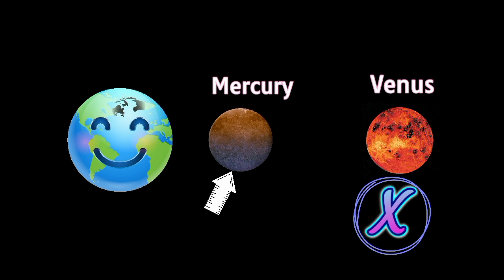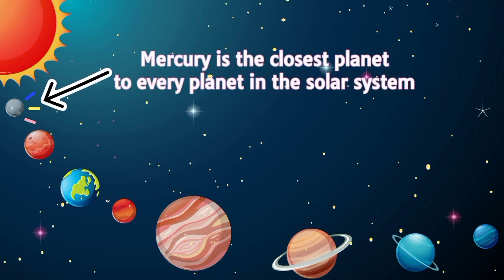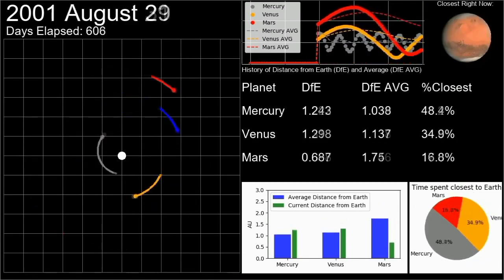But as an article in Physics Today points out, over half the time Venus is not the nearest planet. Mercury is. In fact, the scientists behind the article crunched the numbers and found that on average Mercury is the closest planet not only to Earth but to every other planet in the solar system as well.